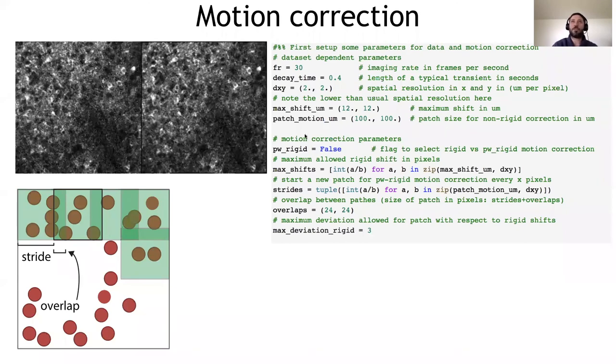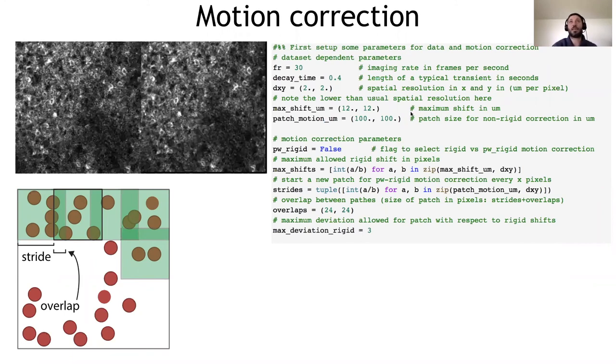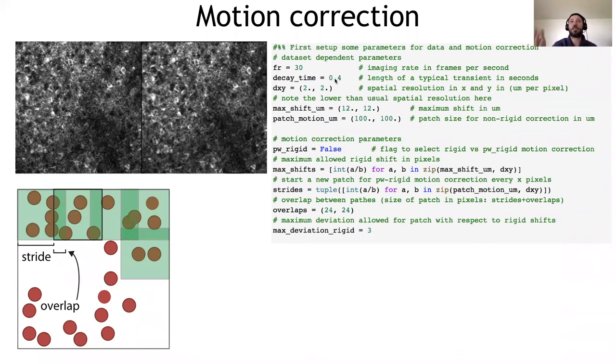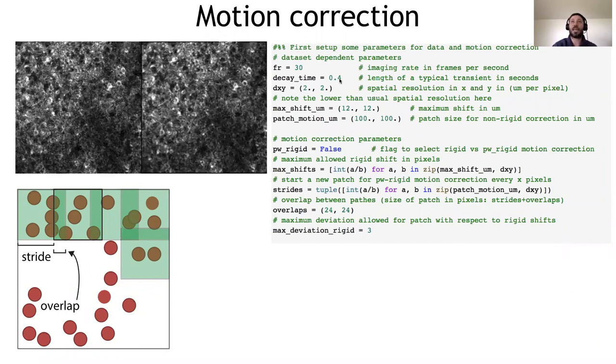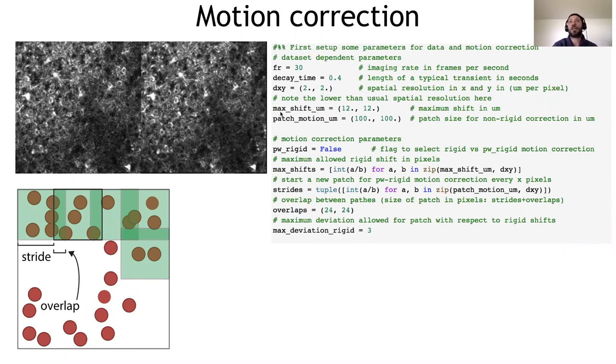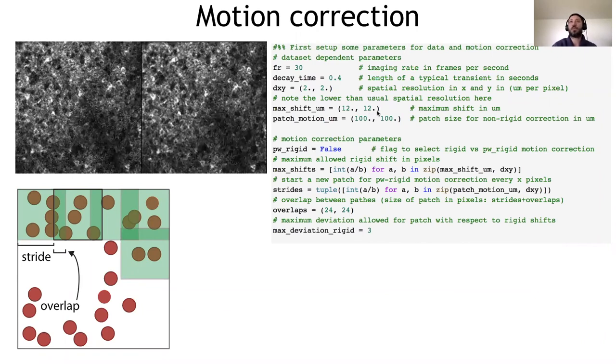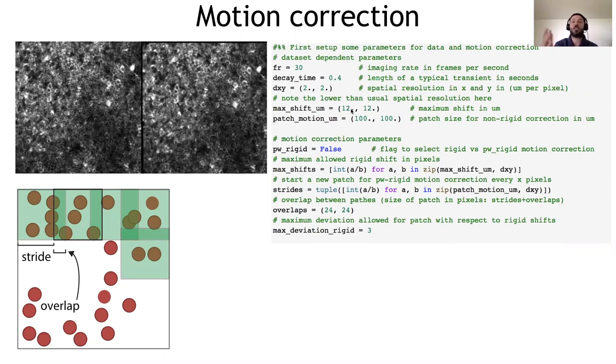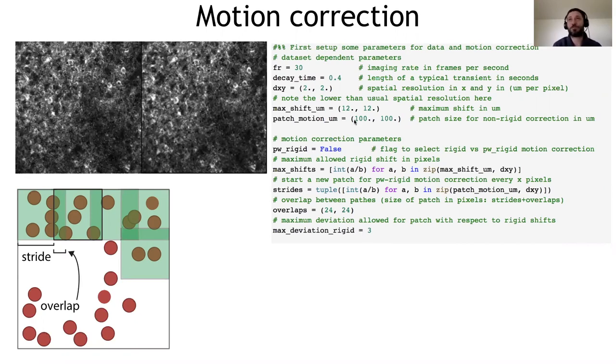So we have an approximation of this operation. We basically tile the field of view with these little patches. We motion correct each of them. And then we merge everything into this movie. On the right, you have a set of parameters that you want to use when you perform motion correction and in general when running CaImAn. Frame rate, 30 Hertz in this case, the decay time is typical of the indicator that you're using. They might be, for instance, in this case, GCaMP6F. This is their spatial resolution in X and Y pixels. And this is the maximum shift that you are allowed.